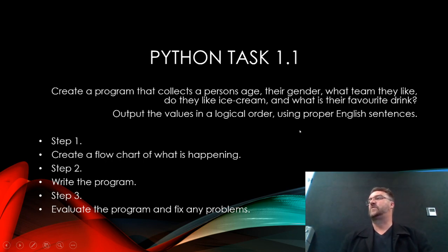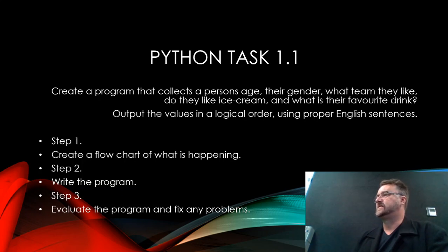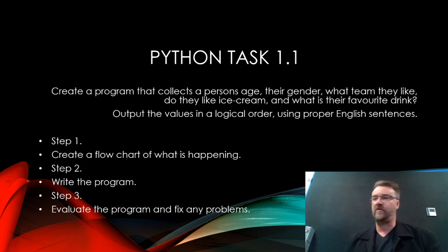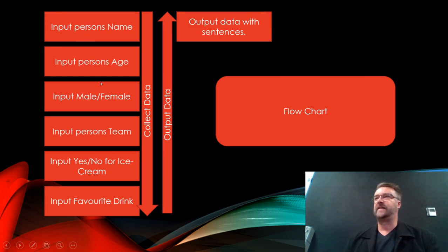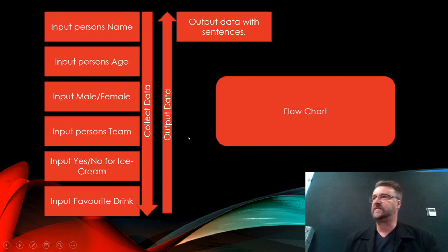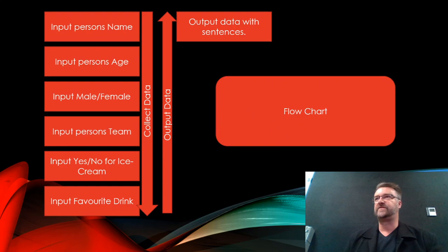So Python task 1.1 is to create a program that collects a person's age, their gender, what team they like, do they like ice cream, and what is their favorite drink. You've got to create a flow chart on what is happening. You've got to write the program and evaluate it and fix any problems. So let's have a look at what a flow chart could look like: input person's name, input person's age, input male and female, input person's team, input yes or no for ice cream, and input favorite drink. Then output that data with sentences. Please pause the video and see if you can do it.